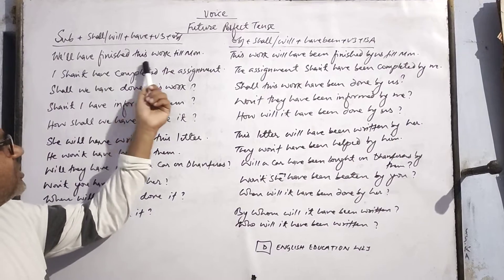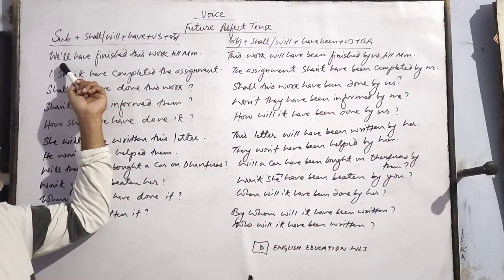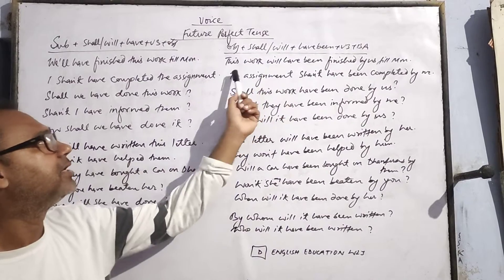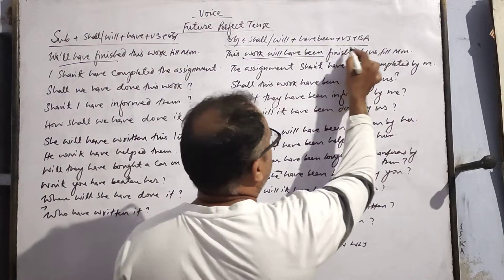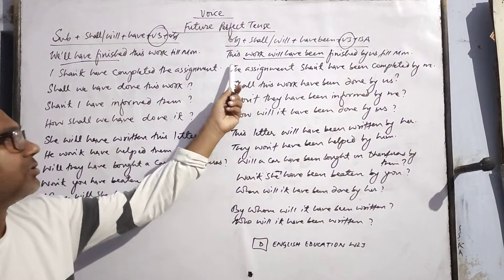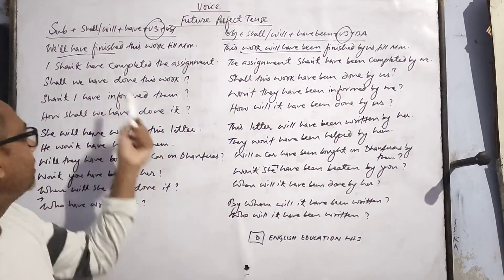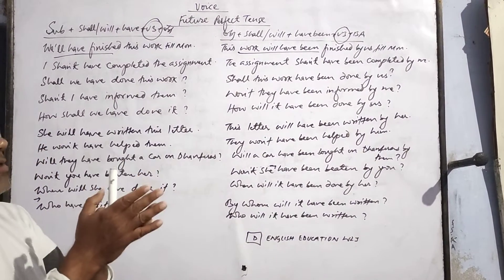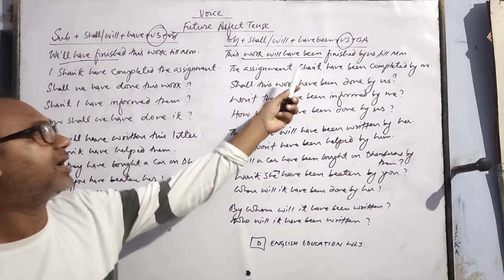Example: 'We will have finished this work till Monday.' Monday तक हम लोग इस काम को पूरा कर चुके होंगे। Passive form: 'This work will have been finished by us till Monday.' ये का हम लोग के द्वारा खतम हो चुका होगा।